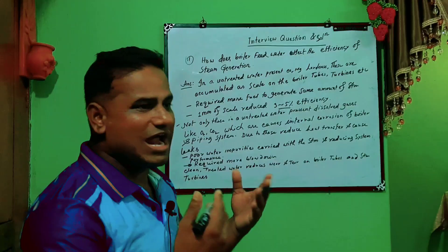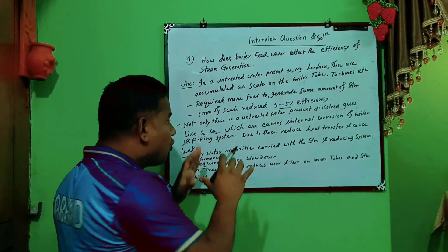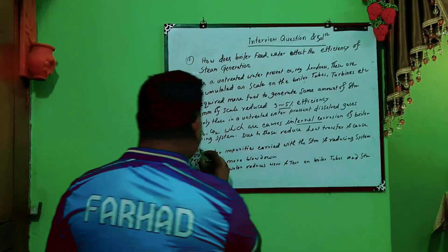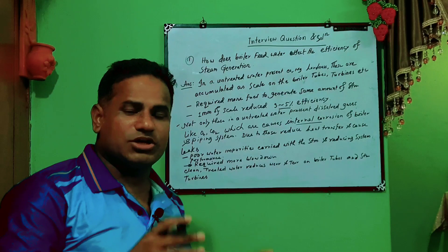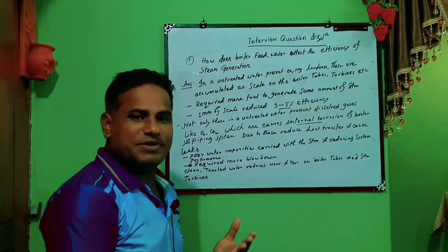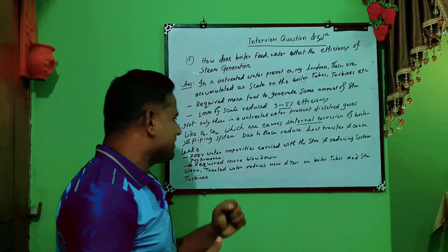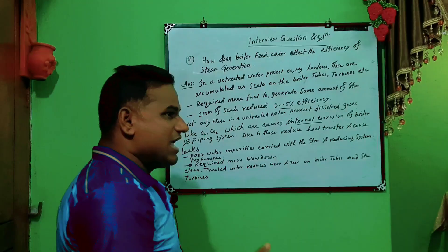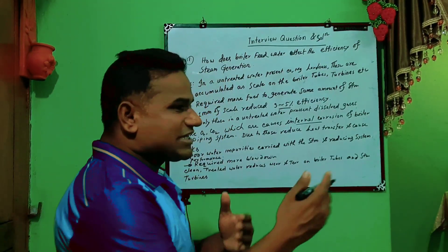The second issue: untreated water contains dissolved gases like oxygen and carbon dioxide, which cause internal corrosion of the boiler and piping system. Due to this corrosion, heat transfer is reduced and leakage can occur.